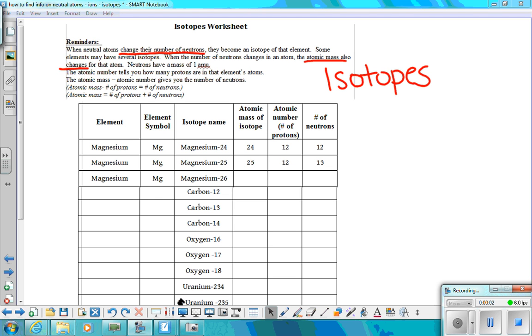Let's talk about isotopes and how do we find the information about isotopes. Isotopes are just more atoms of the same element that have only changed their number of neutrons, which in exchange increases or may decrease the atomic mass.